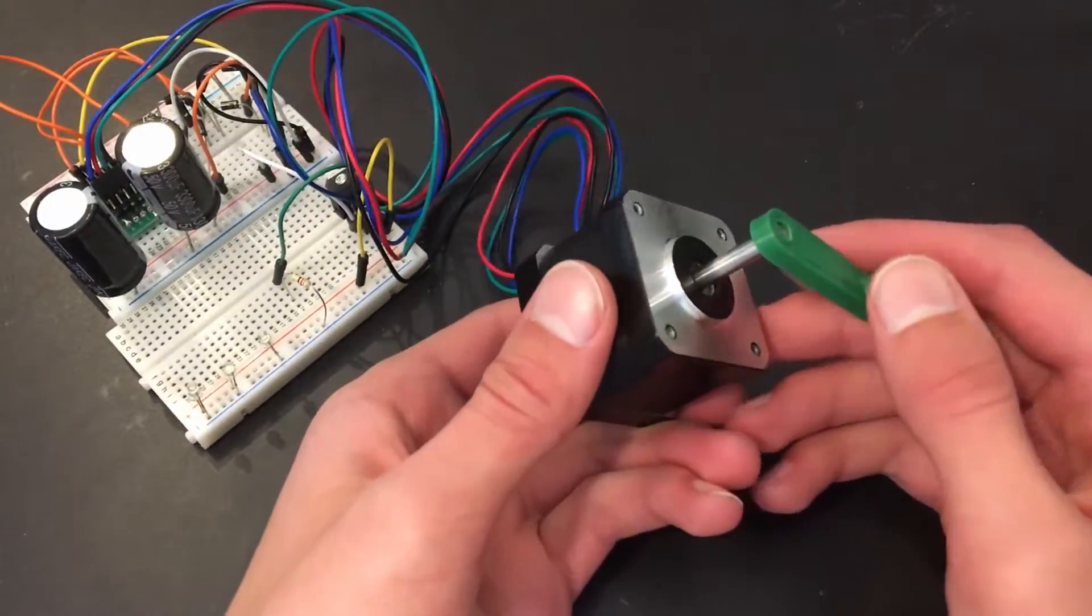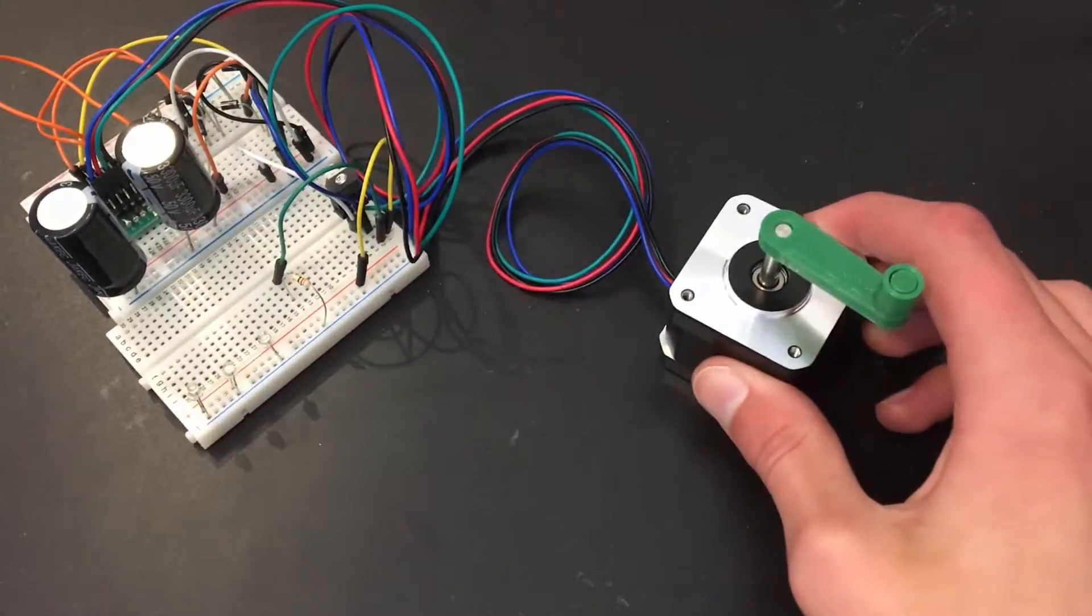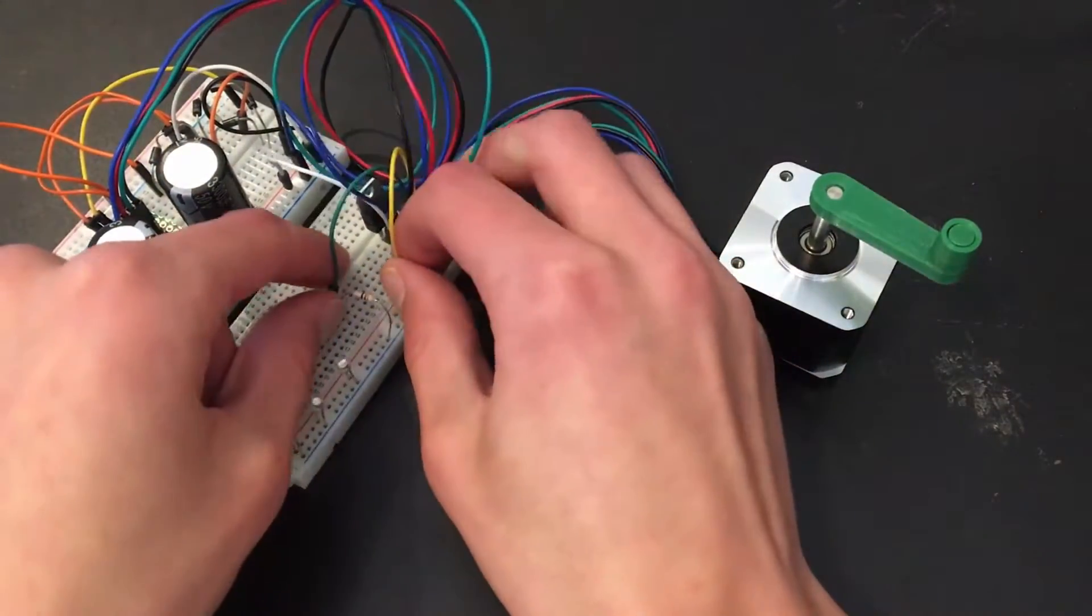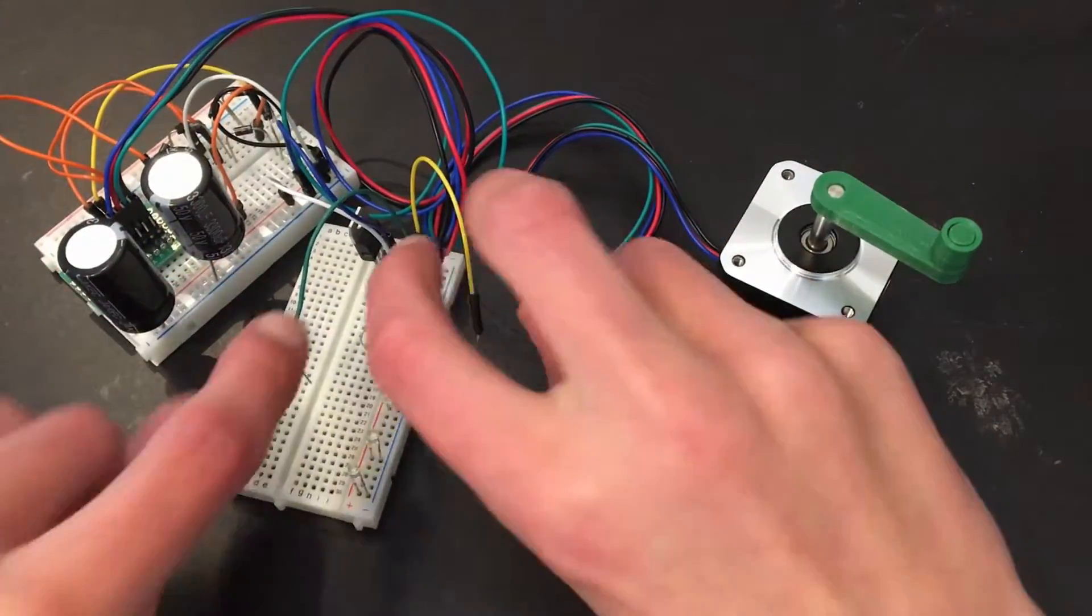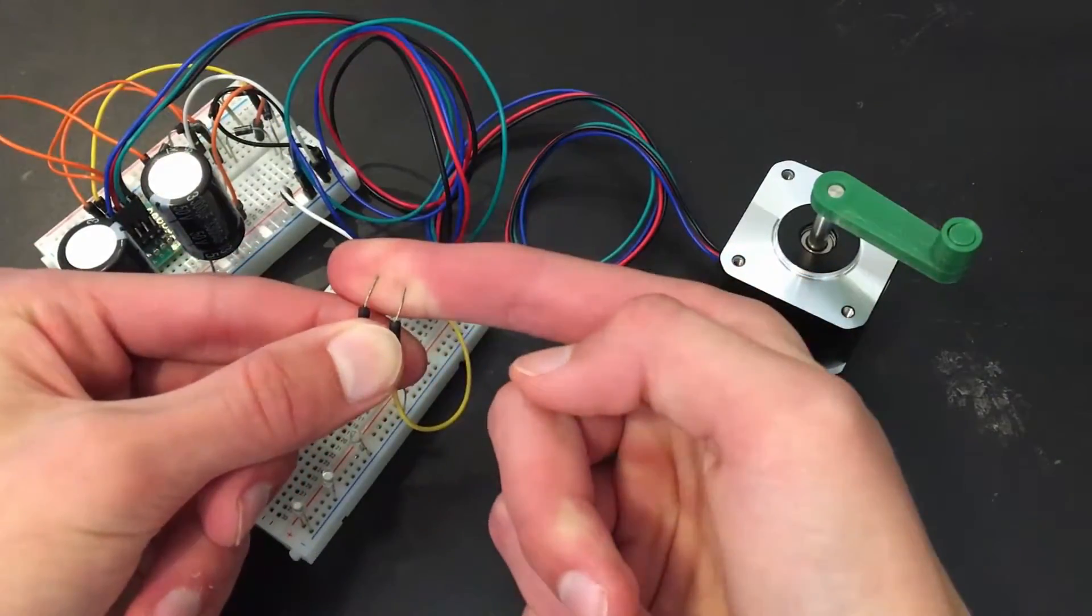To hook this up to a phone charger or a power bank, anything that runs on USB, you would need to grab a USB cable. Instead of hooking the output wires of the linear regulator to some LEDs like I did in this case, you would take them and hook them up to the USB power wires.